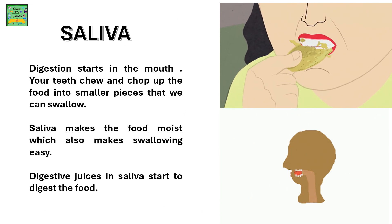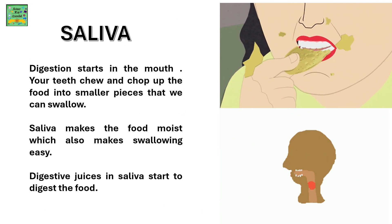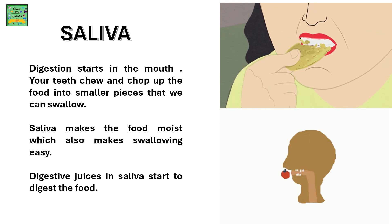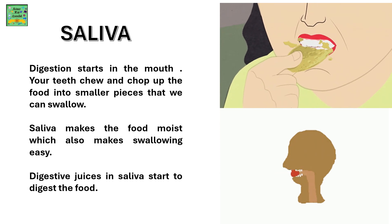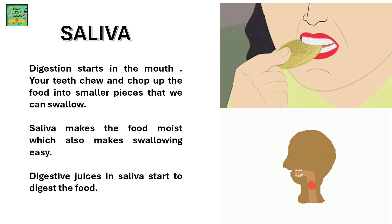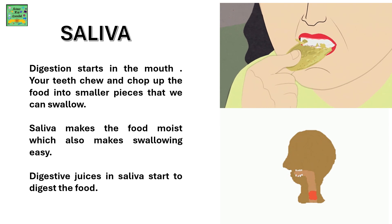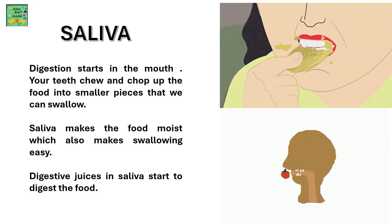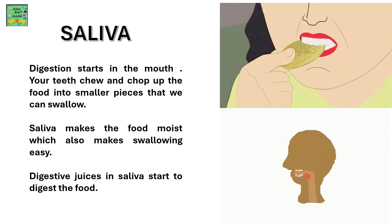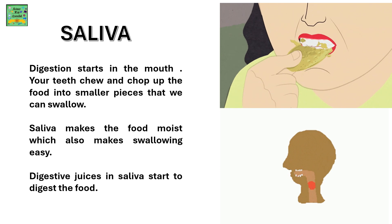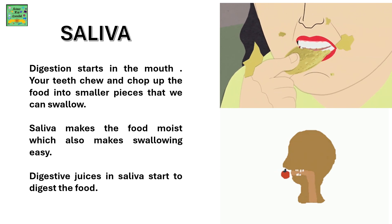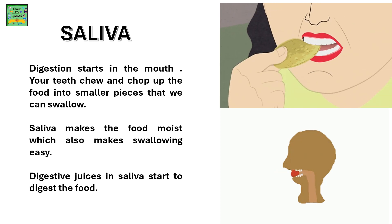Saliva. Digestion starts in the mouth. Your teeth chew and chop up the food into smaller pieces that you can swallow. Saliva makes the food moist, which also makes it easier to swallow. Digestive juices in saliva start to digest the food.